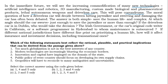The moral question of how a driverless car will decide between hitting a jaywalker and swerving and damaging the car has often been debated. The answer is both simple — save the human life — and complex: at which angle should the car swerve, just enough to save the jaywalker or more than enough? If the driverless car is in Dublin, who would take the decision — the Irish government, or the car's original code writer in California, or a software programmer in Hyderabad to whom maintenance is outsourced? If different national jurisdictions have different fine print on prioritizing a human life, how will it affect insurance and investment decisions, including the transnational ones?